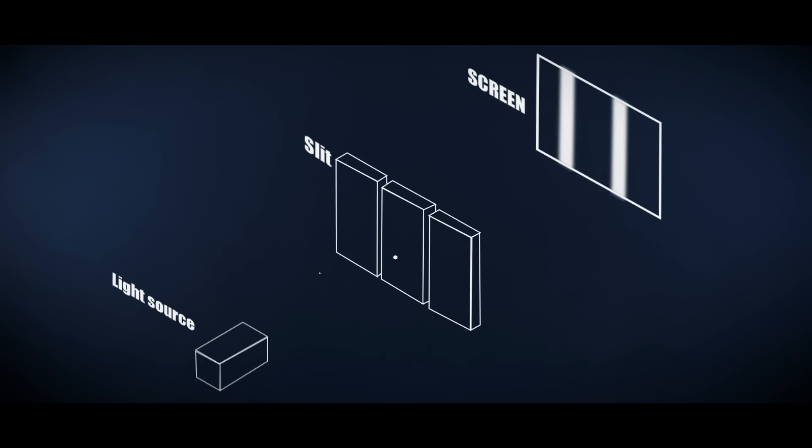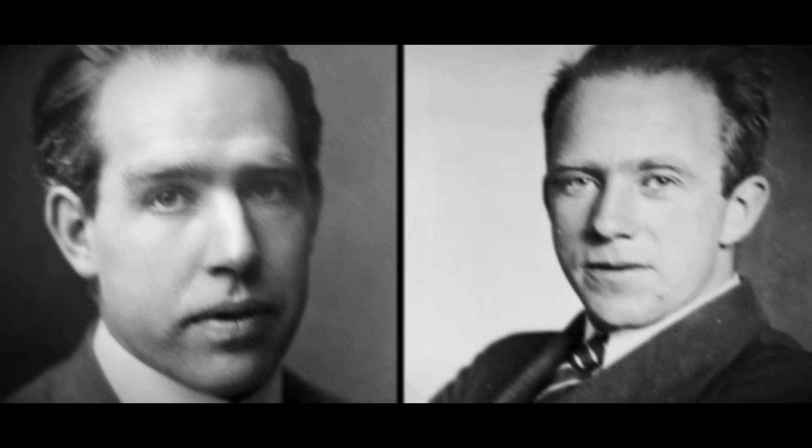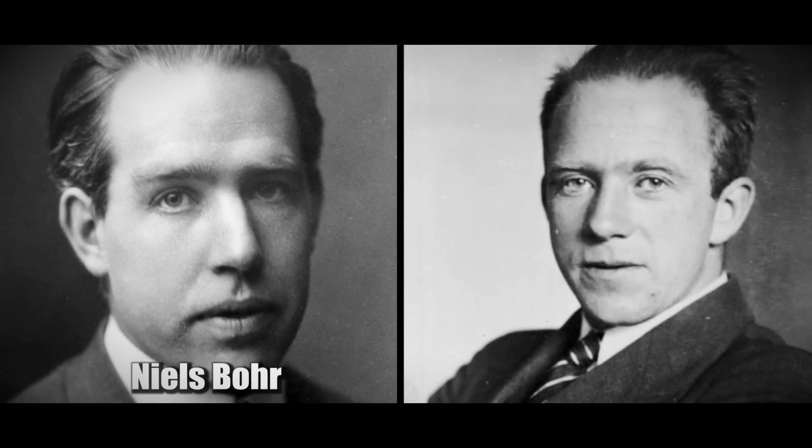But even when we limit ourselves to one photon's worth of light, we find the same striped pattern as before. Why does a striped pattern appear even when we are certain that photons are not interfering with each other? Two of the founders of quantum mechanics, Niels Bohr and Werner Heisenberg, proposed an answer to this puzzle.